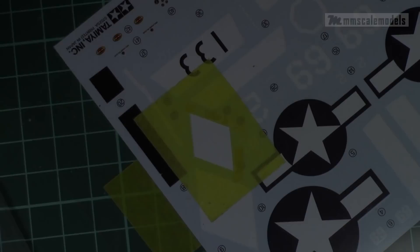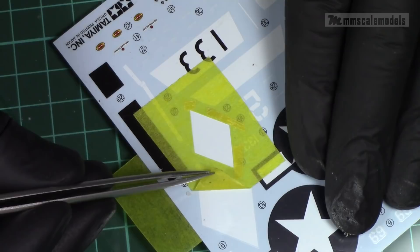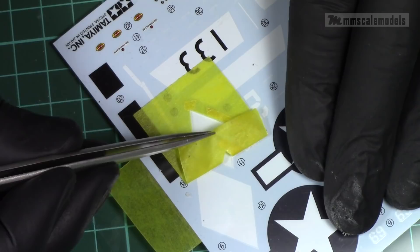This step is quite important because it is very easy to rip the tape. To prevent this from happening I remove the tape very slowly and preferably lifting all external edges first.